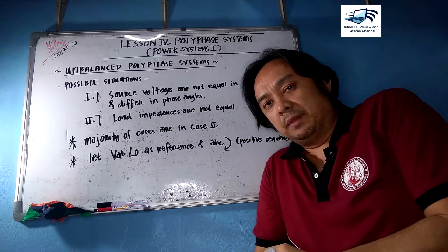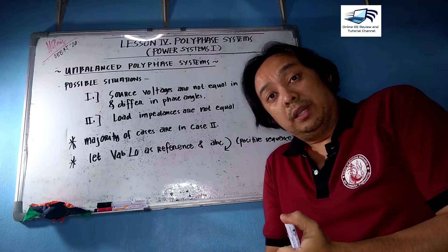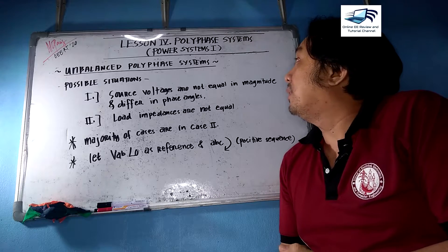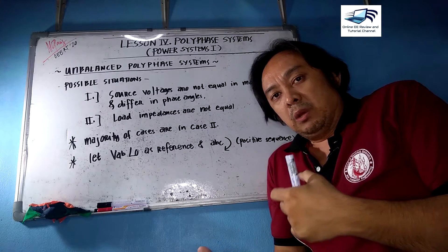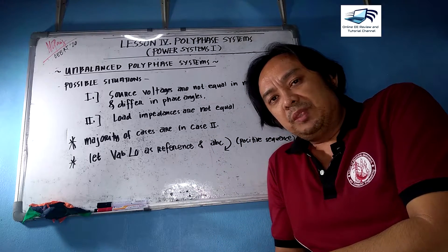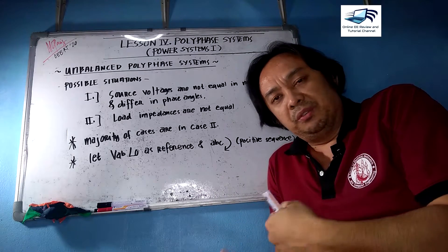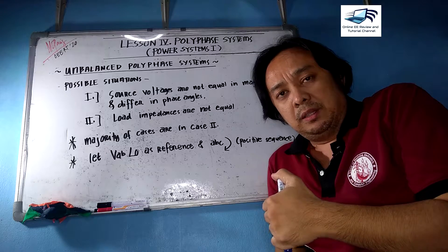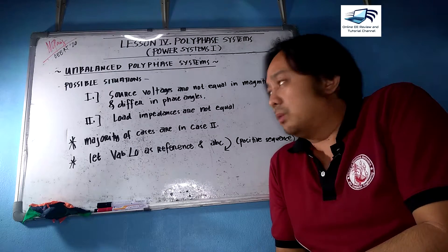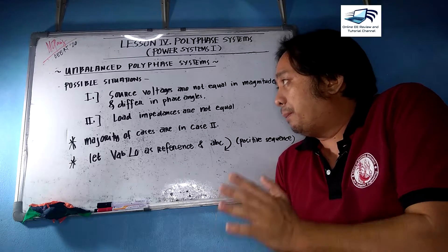Our next topic is unbalanced polyphase systems, which is under polyphase systems in Power Systems One. Just a recap: our last topic was polyphase systems, from which we developed different types of sequences, discussed problems and applications. Now, the difference between balanced and unbalanced polyphase systems depends on two possible situations.